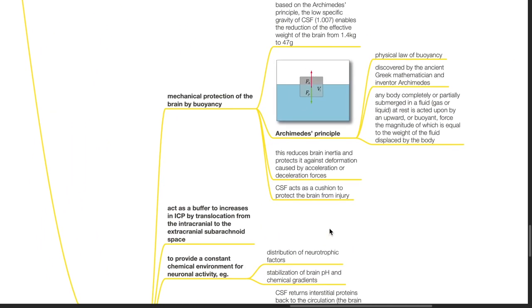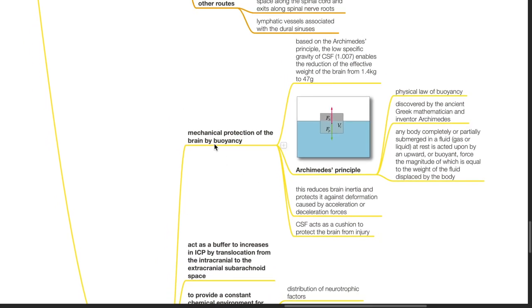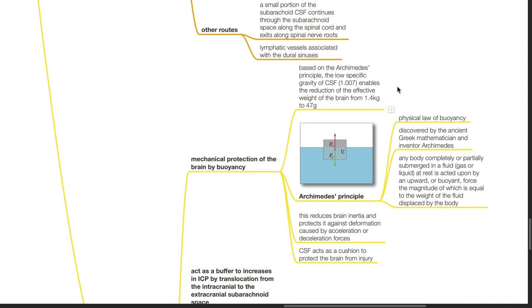CSF functions. 1. Mechanical protection of the brain by buoyancy. This is based on the Archimedes principle. The low specific gravity of CSF enables the reduction of the effective weight of the brain from 1.4 kg to 47 grams.